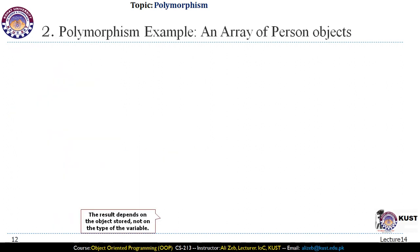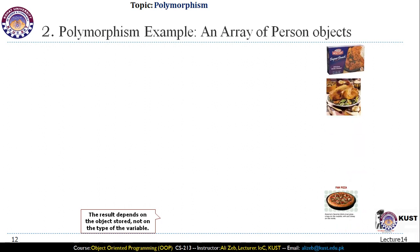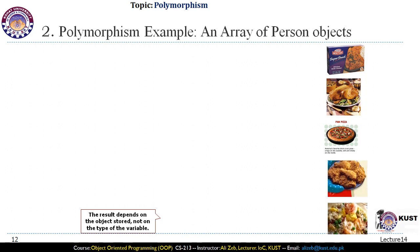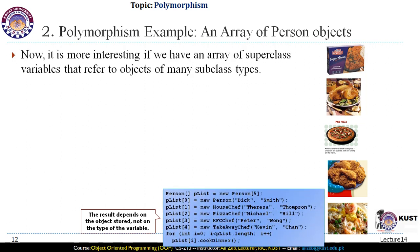In our previous lecture we talked about an example where we had a Person class and different kinds of chefs as subclasses. We had a cookDinner method in the Person class which was overridden by the subclasses, and we were calling that method on objects of those subclasses, getting different kinds of results.